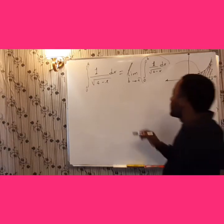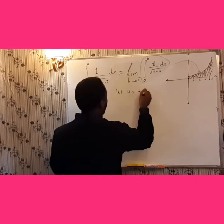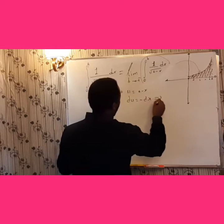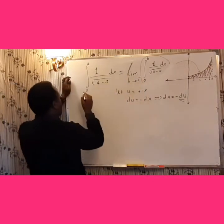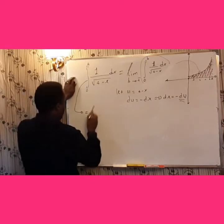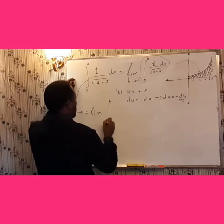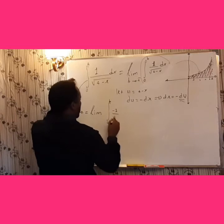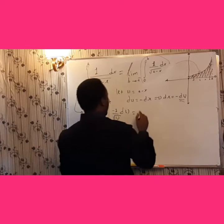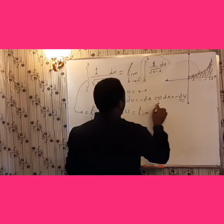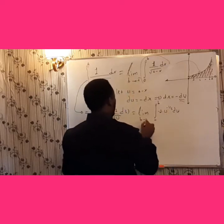To find this region, simply we have to find the limit. Let u = 4 minus x, then du = −dx, which implies dx = −du. In place of dx we can replace −du. Therefore, this is equivalently given by the limit of the integral from 0 to b of −1 over square root of u du, as b approaches 4 from the left. This equals the limit of the integral of −1 times u raised to the power −1/2 du, as b approaches 4 from the left.